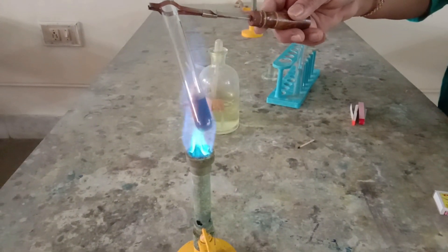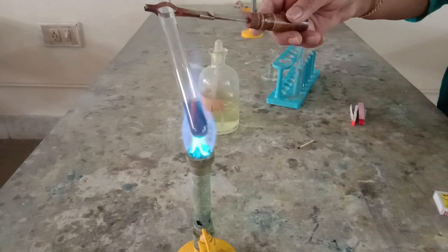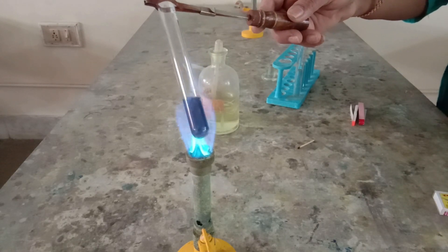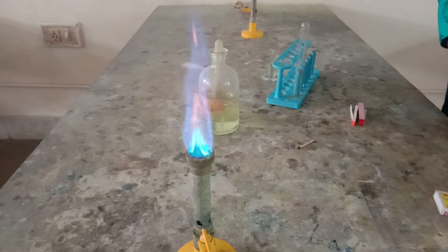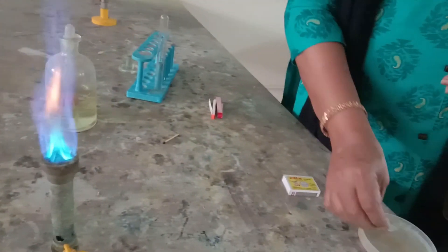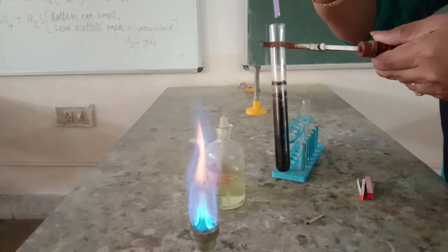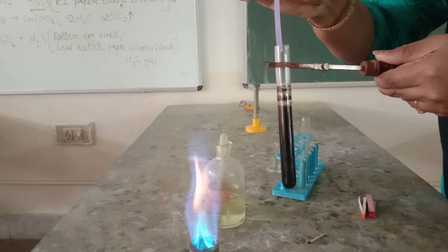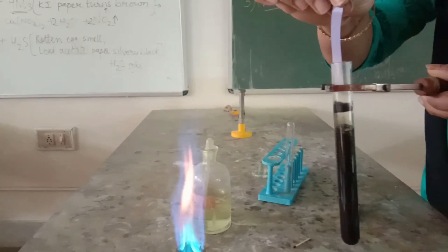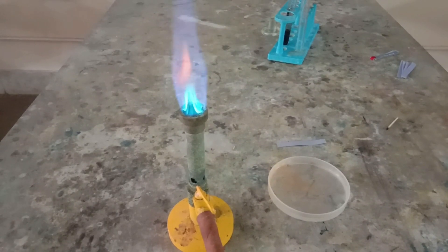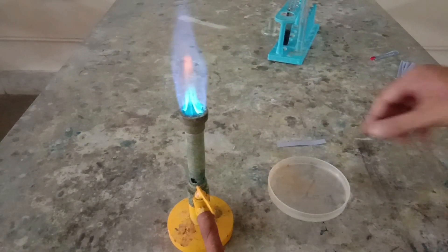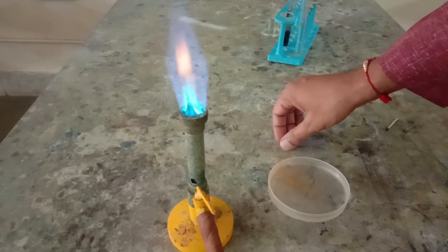The reaction starts. Chlorine gas is a bleaching agent, which means it is going to change the color of the litmus paper. So I'm going to dip a blue litmus paper into the distilled water and gently place the moist blue litmus paper on the top of the test tube. You will see that the blue litmus paper quickly converts to red and finally converts to white in color.